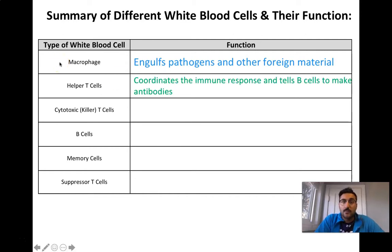Helper T cells coordinate the immune response and tell B cells to make antibodies. So helper T cells are, there's lots of different types of T cells. T cells are types of white blood cells. Helper T cells, they help, they coordinate. They're calling the shots from the background. They're coordinating the immune response by releasing certain factors and they're telling B cells, which is another type of cell, to make antibodies.